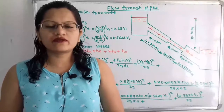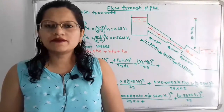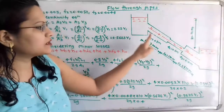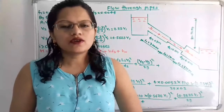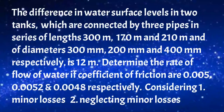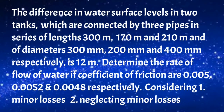Hello friends, this is Priyanka. Today we are going to solve a problem on flow through pipes. In this video we are going to find out what is the discharge through these pipes when they are connected in series. The difference in water surface level in two tanks connected by three pipes in series of lengths 300 m, 170 m and 210 m, and diameters 300 mm, 200 mm and 400 mm respectively is 12 m. Determine the rate of flow of water if coefficients of friction are 0.005, 0.0052 and 0.0048 respectively, considering minor losses and also neglecting minor losses.